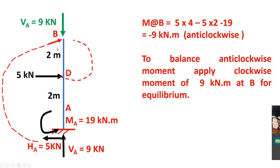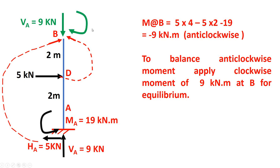Now let us check the moment. Five into two is anti-clockwise, and MA of 19 is itself a moment acting anti-clockwise — so minus 19. We also have five into one clockwise and nine into one clockwise. The summation of moments gives minus 9 kN·m, which is anti-clockwise. To satisfy equilibrium, we apply a clockwise moment of 9 kN·m at B to balance it, making the total moment sum zero.